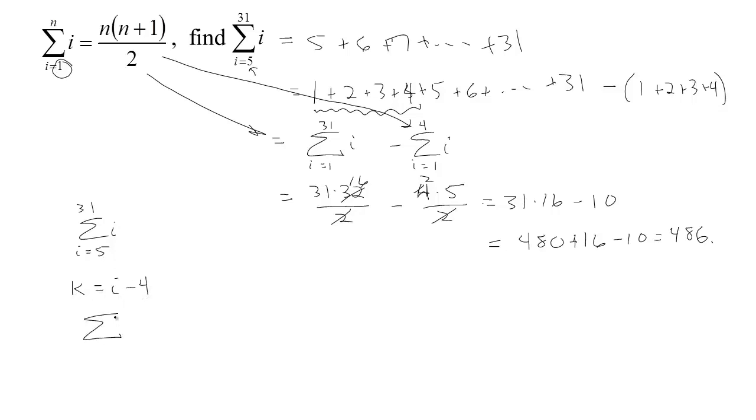So what I'm going to do is rewrite this with a new index. So my new index k, I chose it so that when we start out at i equals 5, then k is actually 1. When we end with i equals 31, then k is 31 minus 4, that's 27. And then now i, I need to write that in terms of k. Well k is i minus 4, so if I solve for i, i is k plus 4.